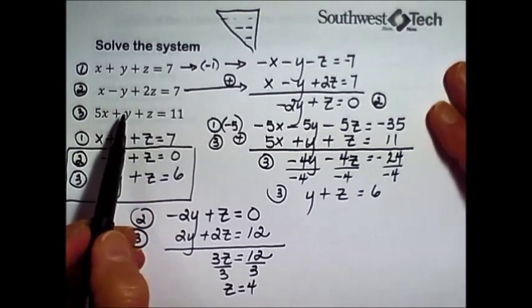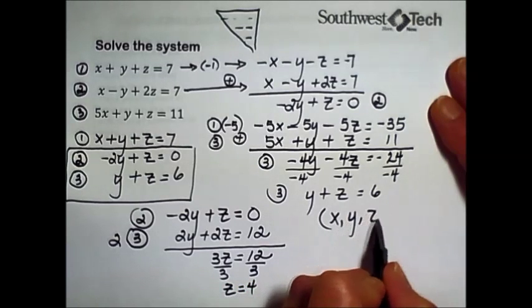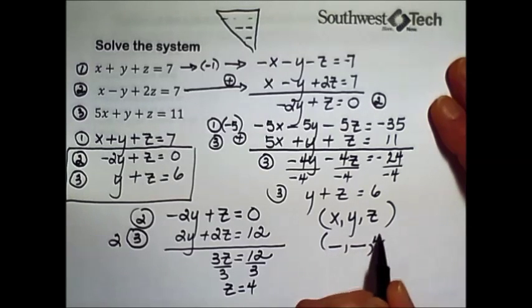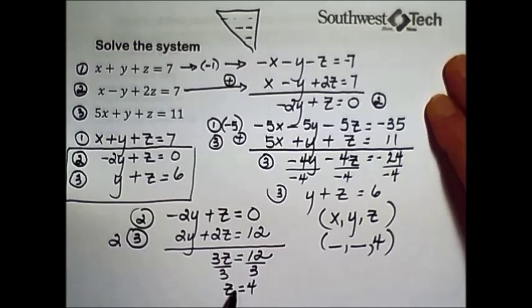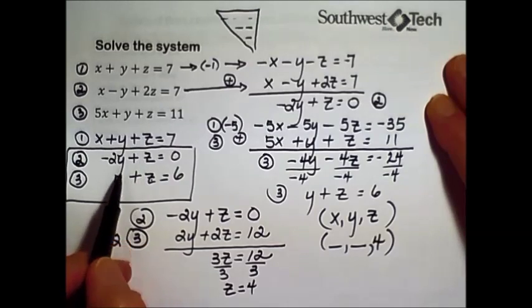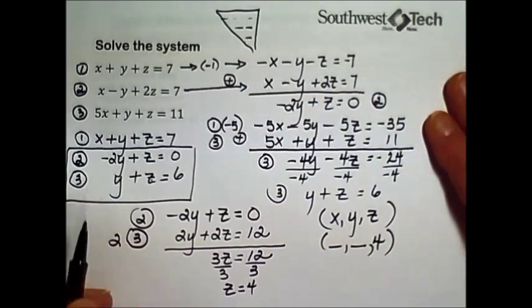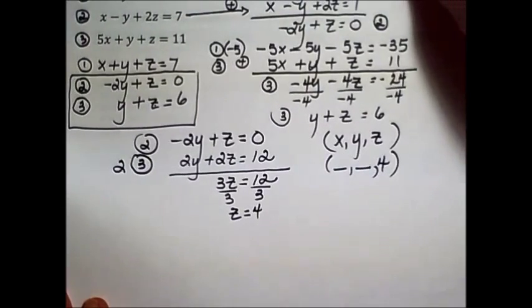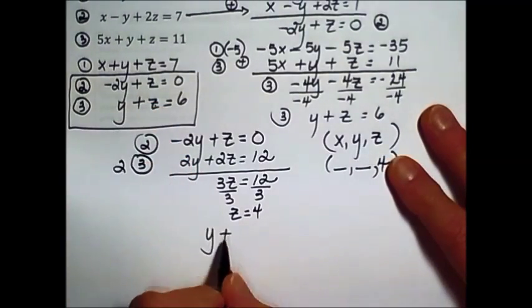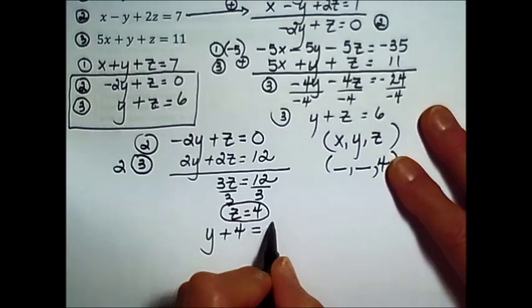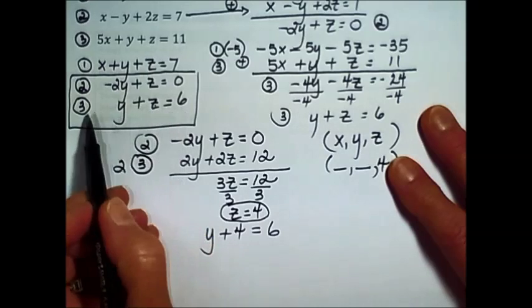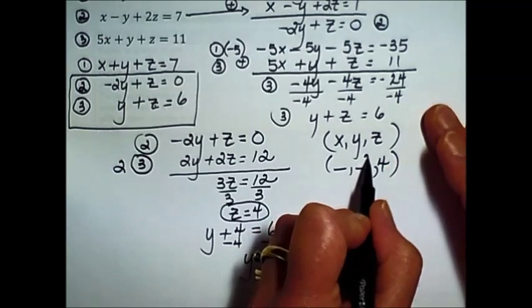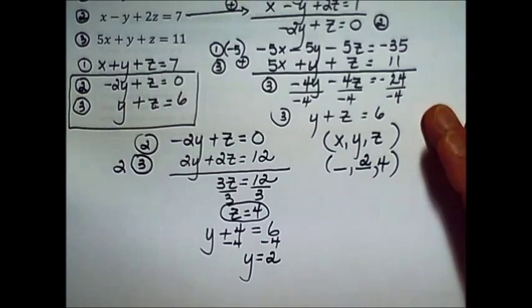These three planes intersect and our ordered triple is x, y, z. We have just found what our z coordinate is. Once we know what z is, pick one of the two equations that has z and just one variable in it. I like the looks of three. Plugging it into equation number three, we have y plus z, which we found to be four, is equal to six. Subtracting four from each side, y is equal to two. We can fill that in for our point of intersection.